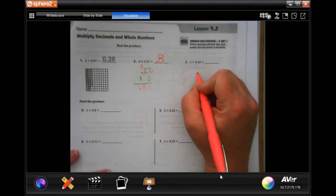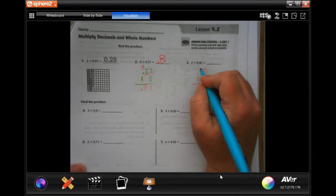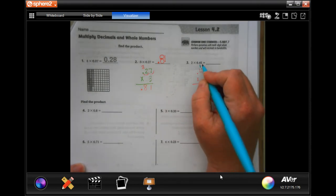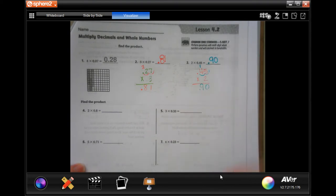So, again, we're going to add on top. 2 times 5 is 10, carry the 1. 2 times 4 is 8, plus 1 is 9. We went in 1, 2 here, 1, 2 here gives us 0.90.